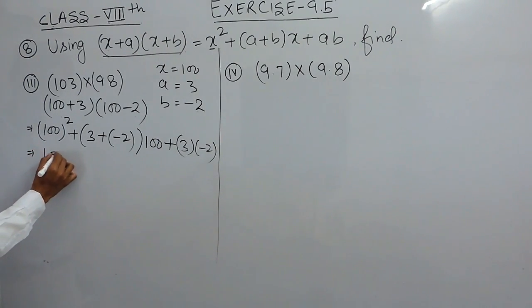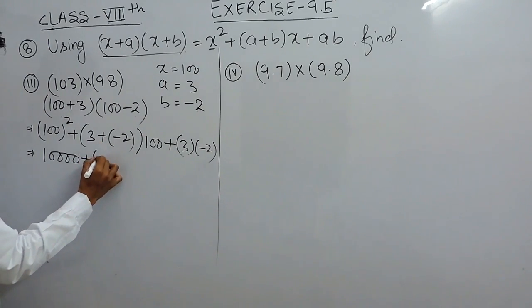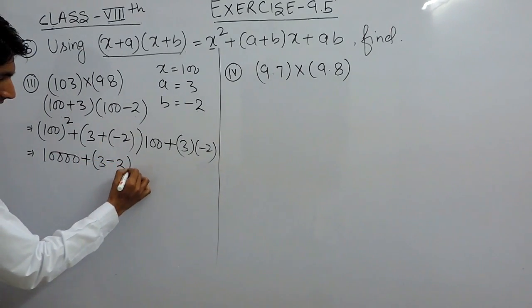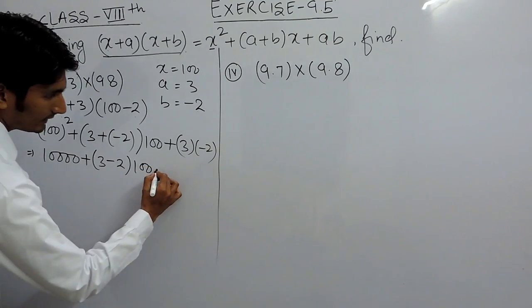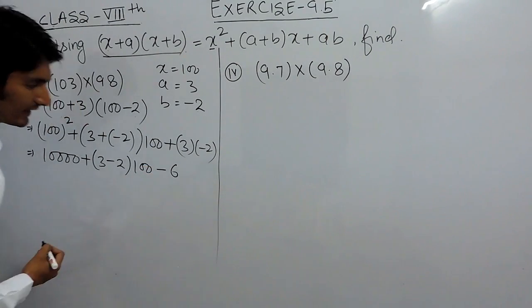Solving this, we know that 100 squared is 10,000, and plus minus is minus, so this is minus 1 times 100, and 3 times 2 is 6 with negative sign.